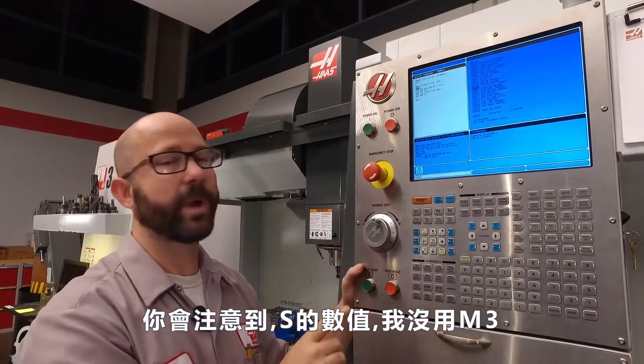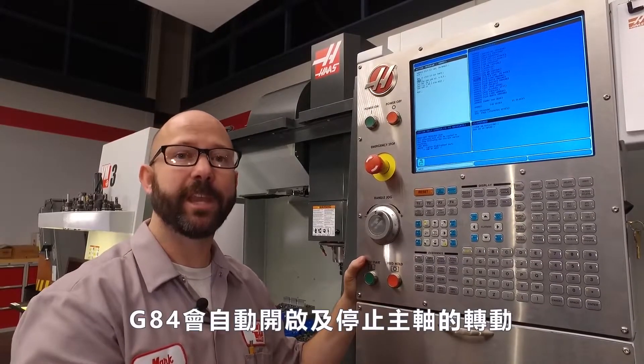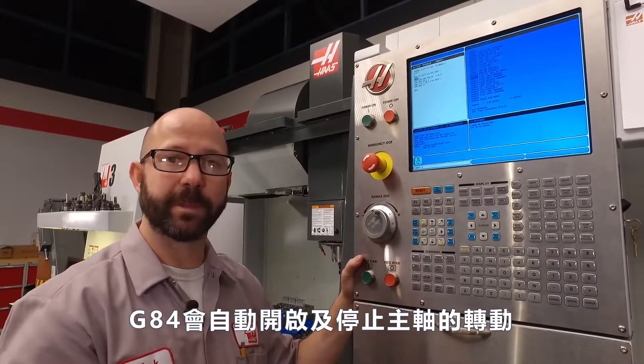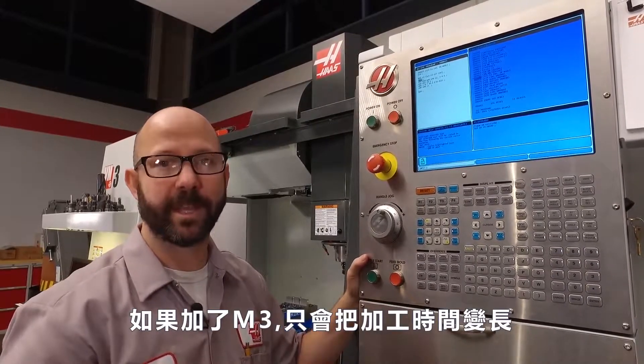Now you might have noticed when I entered that S value that I did not use an M3. It's not necessary. The G84 cycle is going to start and stop the spindle as needed. If I add my own M3, it's just going to make the program take longer.